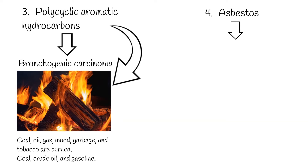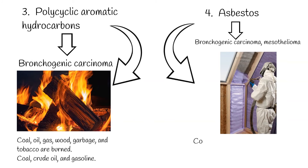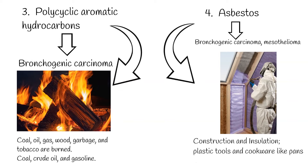4. Asbestos causes bronchogenic carcinoma and mesothelioma. Asbestos-containing materials have most often been used in construction and insulation. However, some consumer products like sheets, plastic tools, cookware such as pans and pots, and talcum powder may also contain the toxic fibrous material.